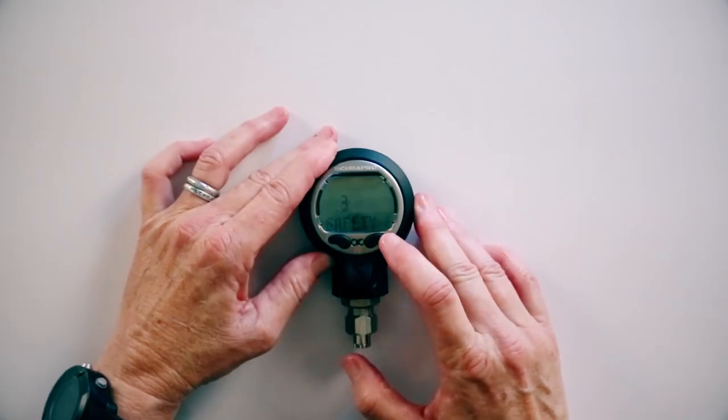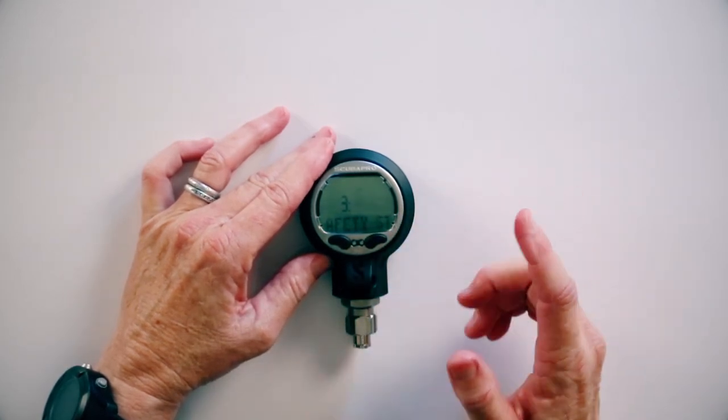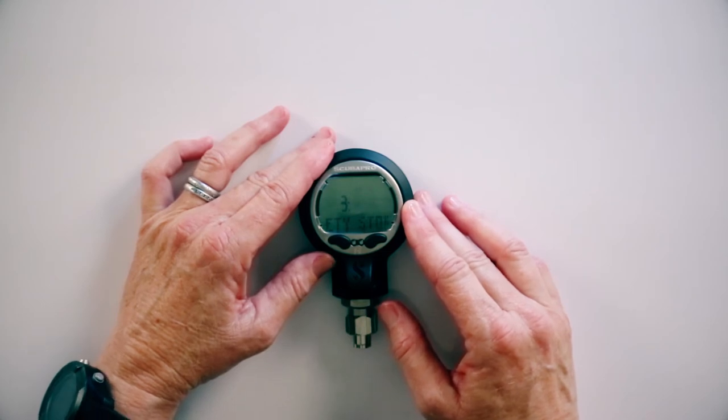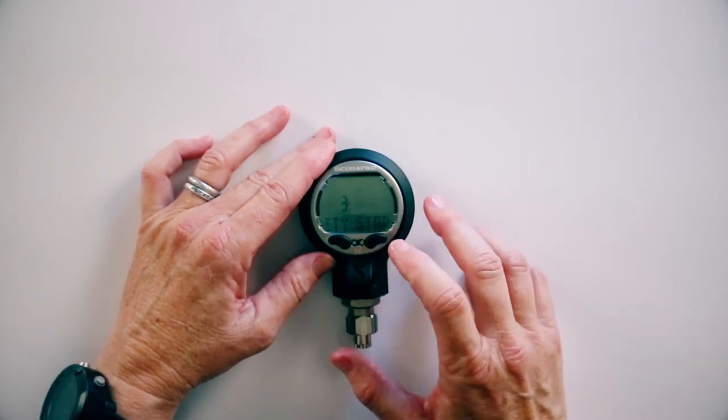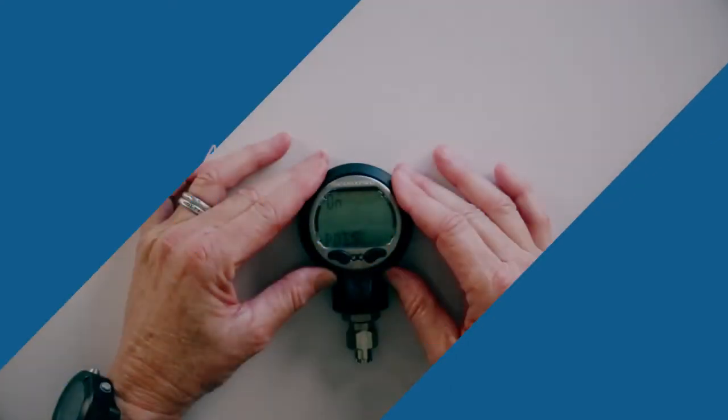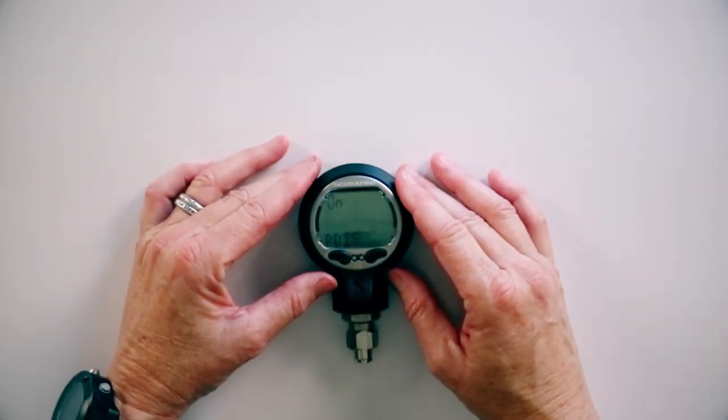As we move on, we got a safety stop timer. Right now it's set for three minutes at 15 feet. I'm going to leave it at that. If I wanted to change it, I would push and hold. It would flash and I would change it to what I want. We come to PDIS, Profile Dependent Intermediate Stops. What this does, it takes into account your nitrogen loading, your previous and current dives. You can access this or activate it if you want to have built in safety on your dives.